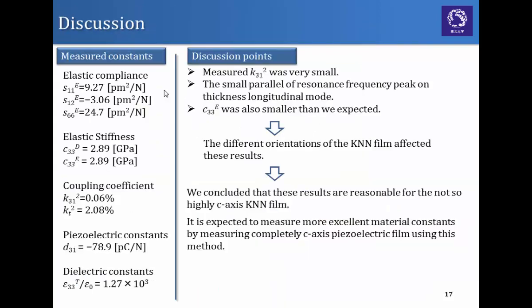So for discussion, in this research we measured these material constants of the blanket KNN film. Some of the material constants such as K31 squared or c33e are smaller than we expected. I think this is because of the different orientations of our films. We concluded that these results which we obtained are reasonable for the not so highly C-axis KNN film. It is expected to measure more excellent material constants by using more highly C-axis materials.